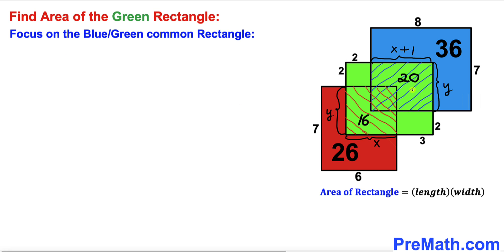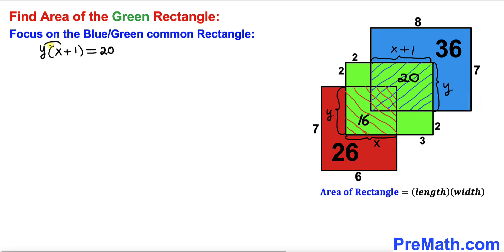Now let's calculate the area of the blue-green common rectangle. Applying the area formula, the area is y times (x plus 1), and this area equals 20. So y times (x plus 1) equals 20. Distributing, we get xy plus y equals 20. Let's call this Equation 1.